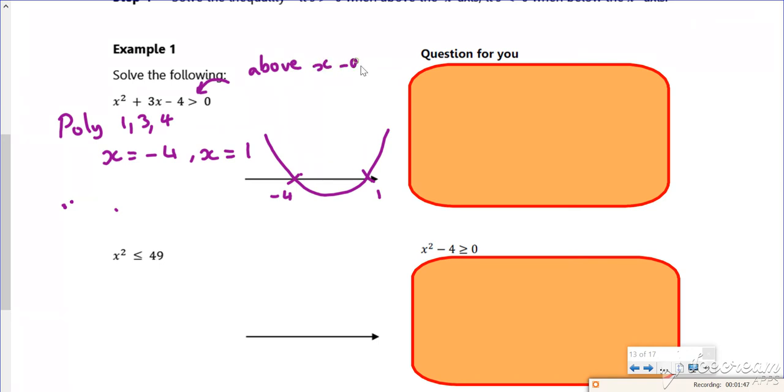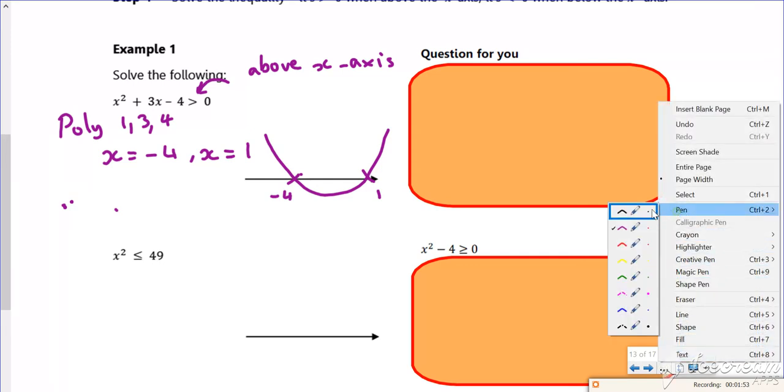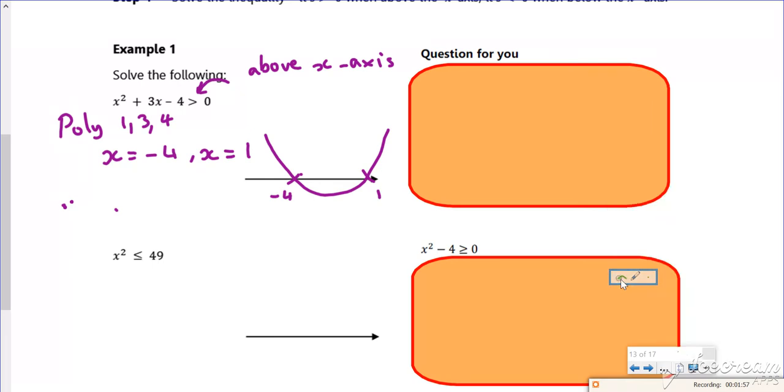Where it says greater than, that means I'm looking above the x-axis. So far I've solved it, I've graphed it, now I need to identify the area above these numbers. So I've got x is less than -4 or...